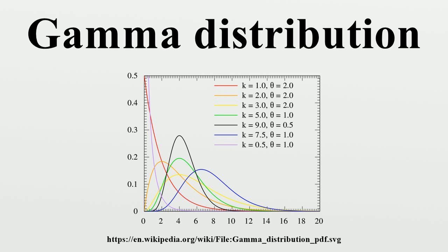Characterization using shape α and rate β. Alternatively, the gamma distribution can be parametrized in terms of a shape parameter α = k and an inverse scale parameter β = 1/θ, called a rate parameter. A random variable x that is gamma distributed with shape α and rate β has a corresponding density function in the shape-rate parametrization. Both parametrizations are common because either can be more convenient depending on the situation. The cumulative distribution function is the regularized gamma function; if α is a positive integer, it has a series expansion.